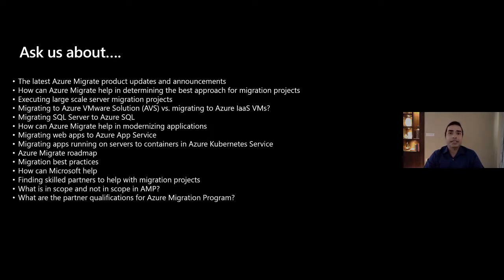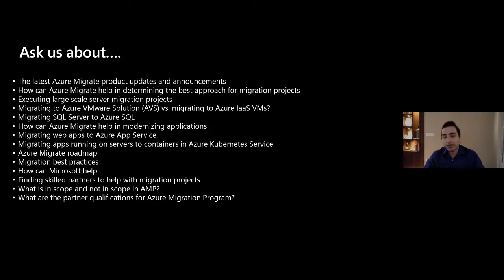With Azure Migrate and AVS, when you discover your VMware VMs — the same 10,000 VMs from Azure Migrate Discovery — you can evaluate them side by side for migration to Azure IaaS VMs or a dedicated host offering like AVS. You can create side-by-side assessments to determine the right treatment for each set of VMs. Once you've decided, you use VMware's HCX offering, which is integrated with our AVS bundle, to perform the migrations. The current recommendation is: discover and assess with Azure Migrate, migrate with VMware HCX over to AVS.